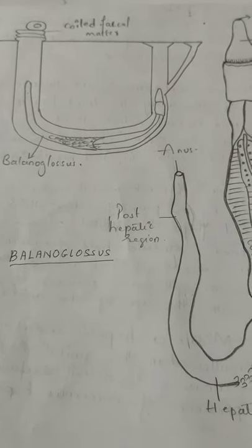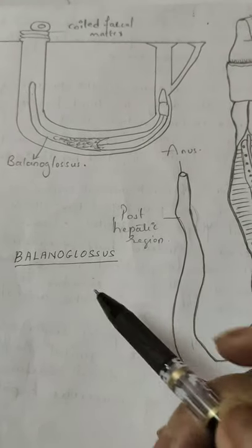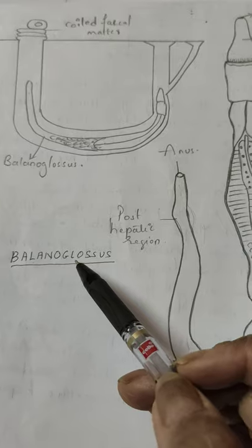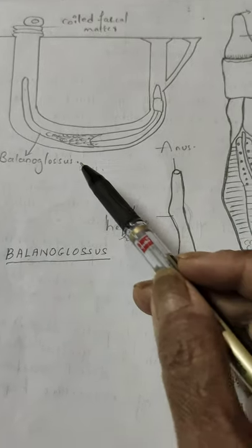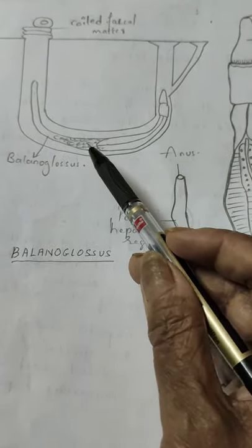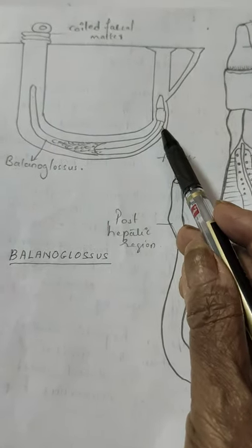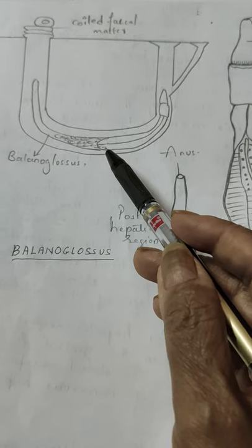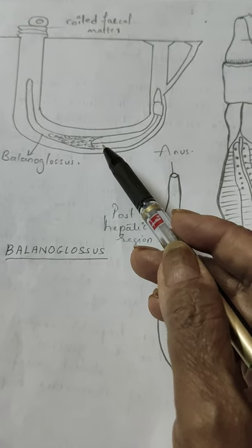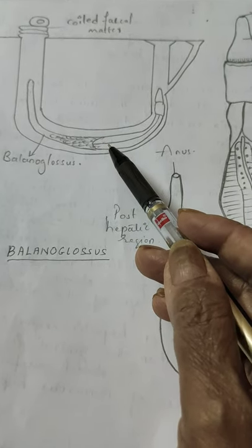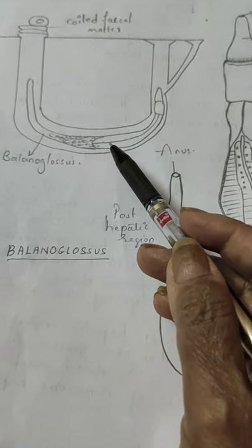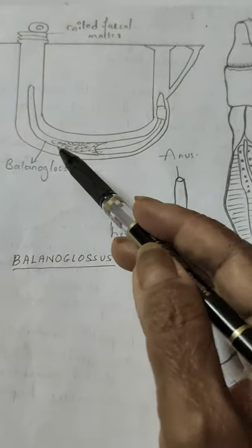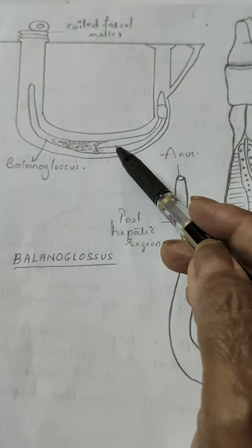Today we will study about Balanoglossus. Balanoglossus is also referred to as the acorn worm or the tongue worm, but it is actually a chordate, not an annelid or a worm.